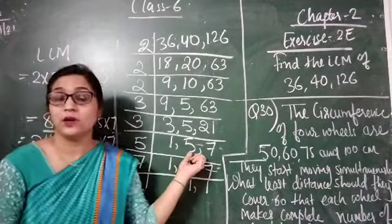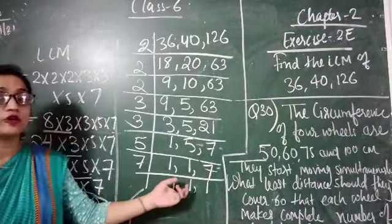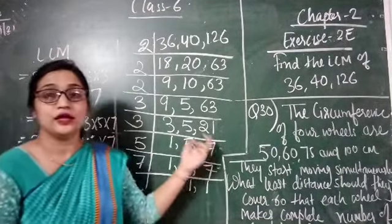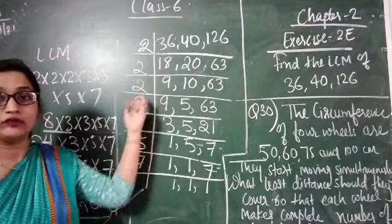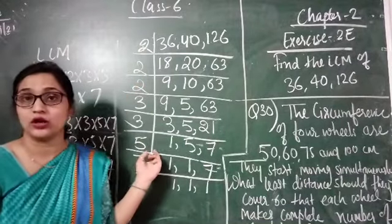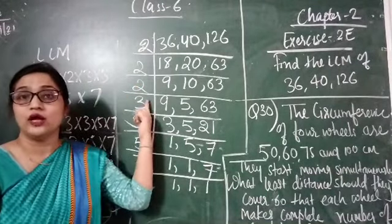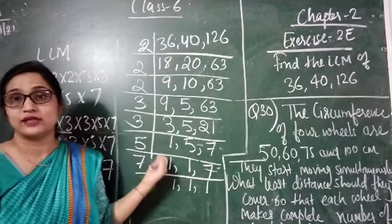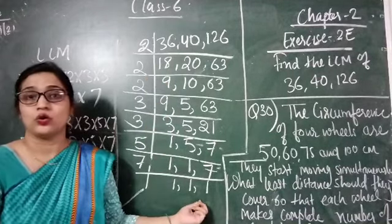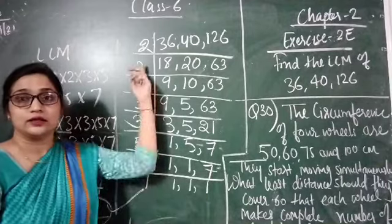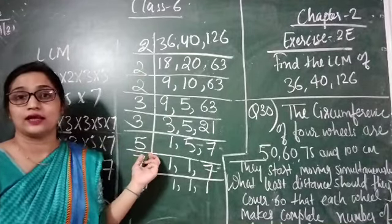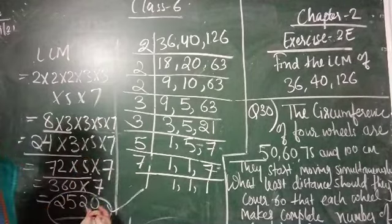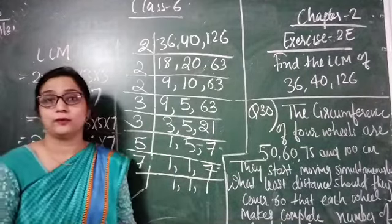So this is the method we have to follow for finding the LCM of any given numbers. We have to divide by prime numbers only, starting by 2. If they are not divided by 2, we take 3, then 5, then 7 and so on. In the end, we multiply all the prime numbers we used to get the LCM.